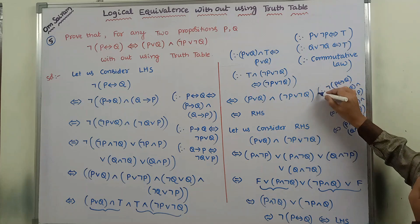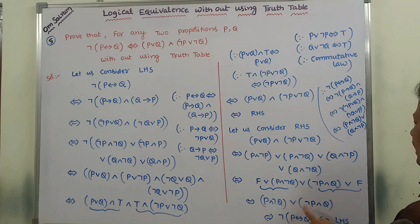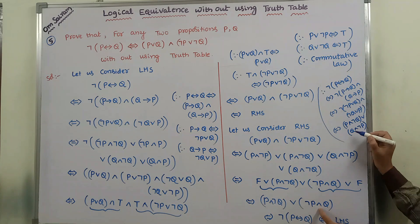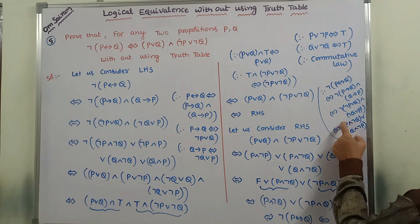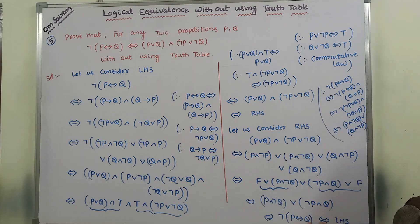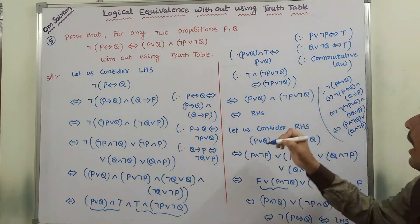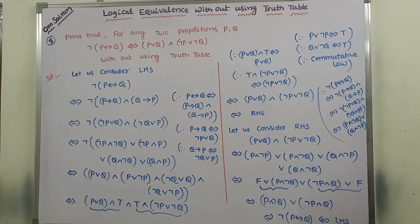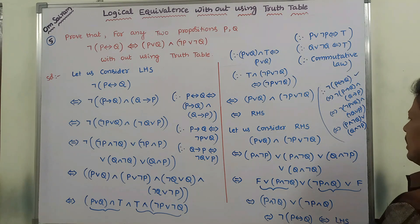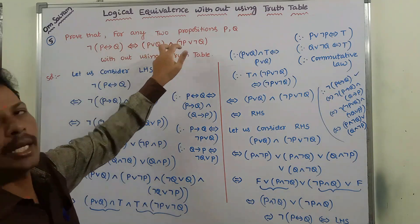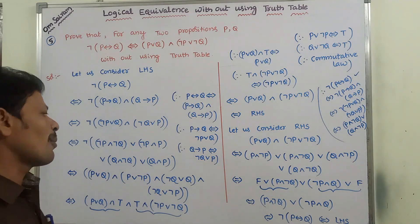So by simplifying the RHS part, we are getting the LHS part. We took the LHS and got the RHS; we took the RHS and got the LHS. Therefore, we can say that this compound statement — negation of P biconditional Q — is logically equivalent to the compound statement P or Q, and negation P or negation Q.